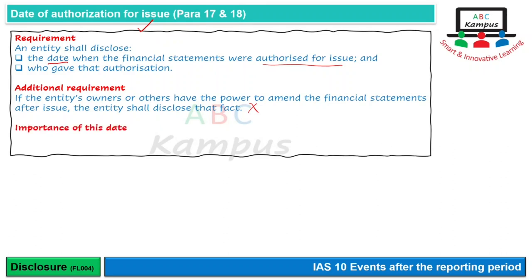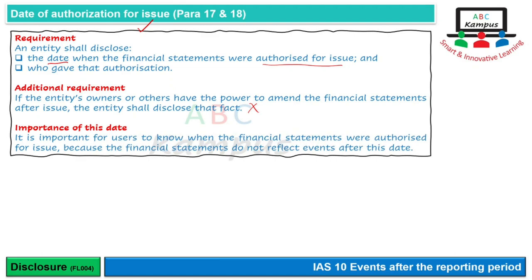Date of authorization को disclose करने की importance यह है ताकि users of financial statements को पता चले कि कब तक के events को financial statements में consider किया गया है। Reporting date पर statement of financial position बन जाती है। लेकिन कब तक के events उस position को reflect करने में consider हुए वो भी पता चलने चाहिए, और उसके बाद के events reflect नहीं हो रहे तो ये इस date से पता चल जाता है.